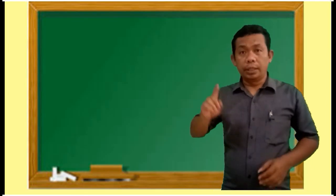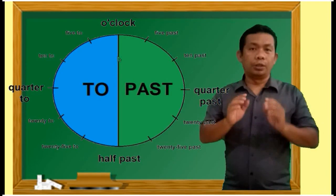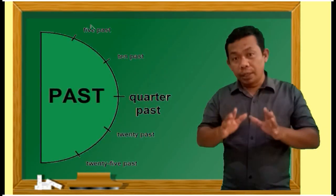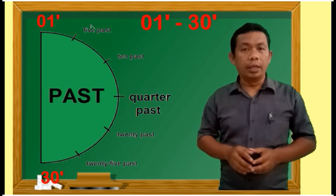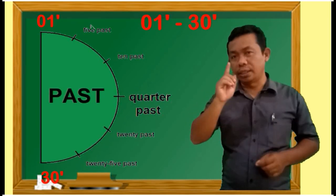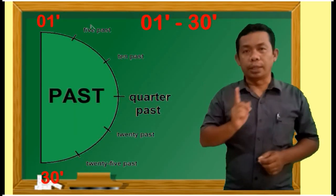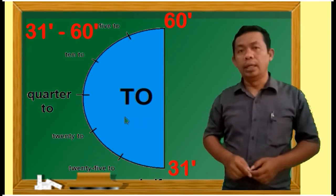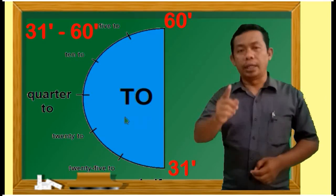Mari kita lihat gambar berikut — penggunaan 'past' dan 'to'. Pada bagian 'past', itu dimulai dari menit ke-1 sampai dengan menit ke-30, yaitu searah dengan jarum jam. Sedangkan penggunaan 'to' itu dimulai dari menit ke-31 sampai ke-60.